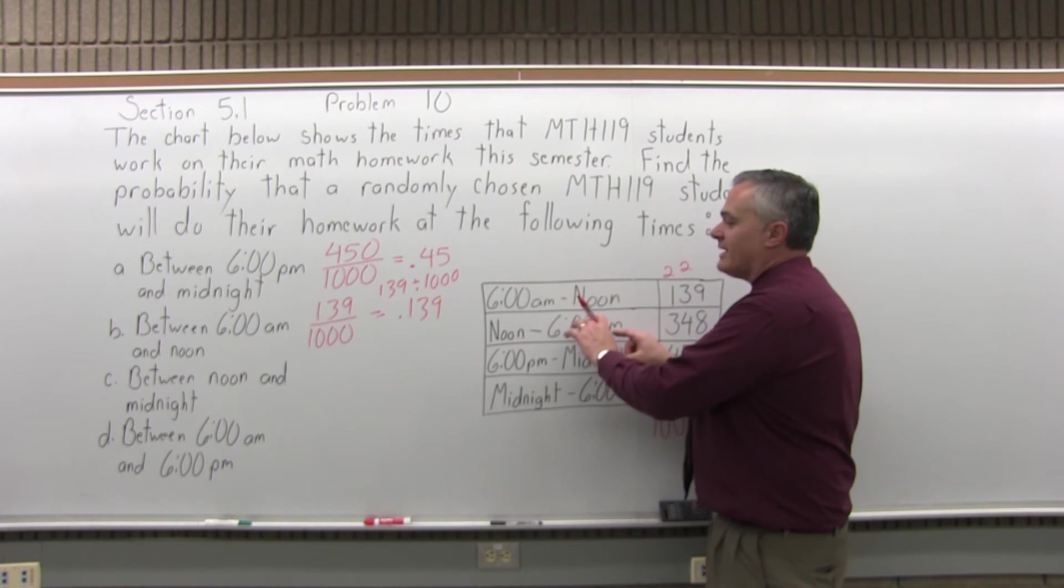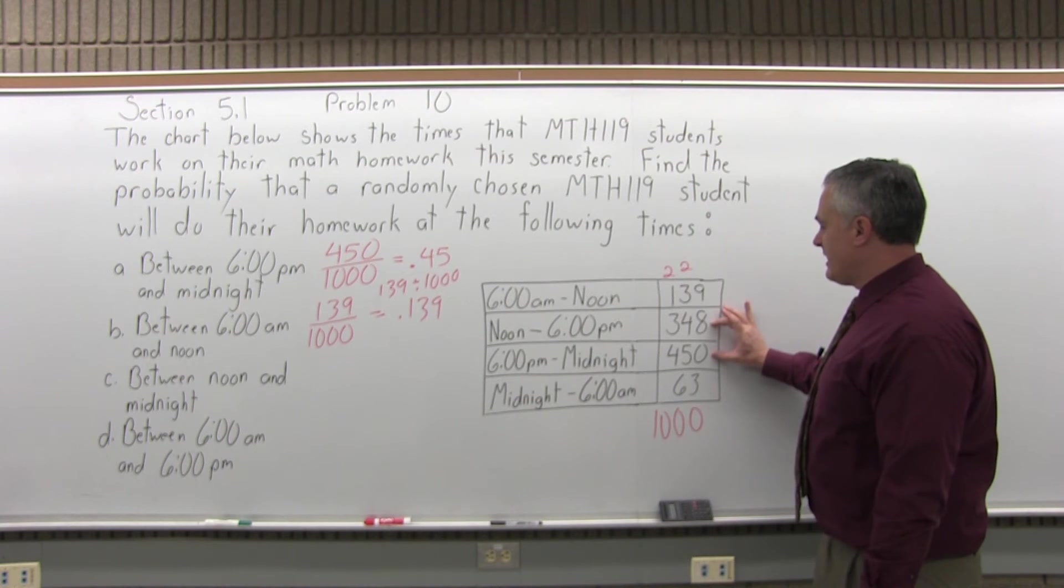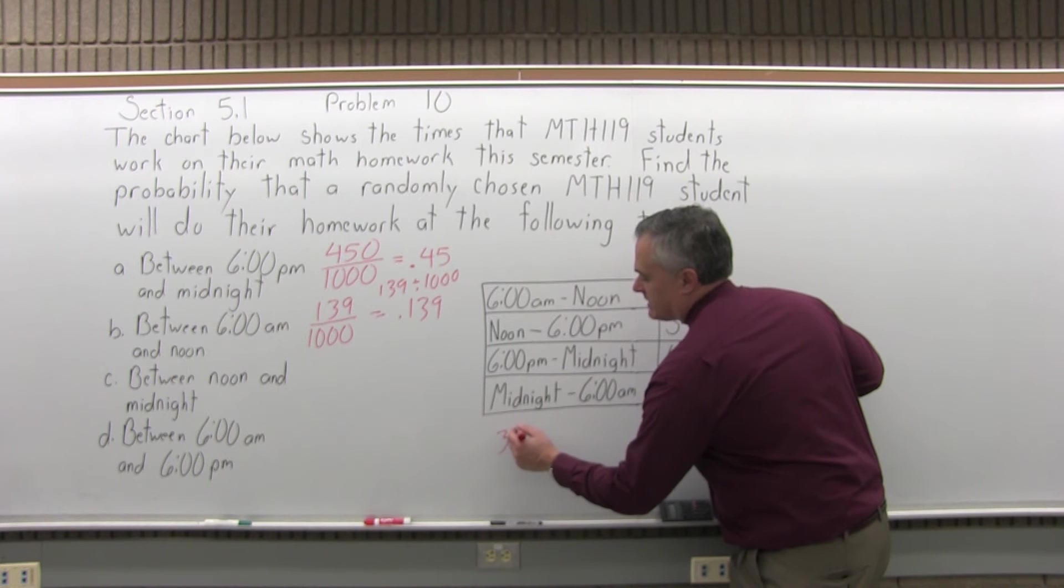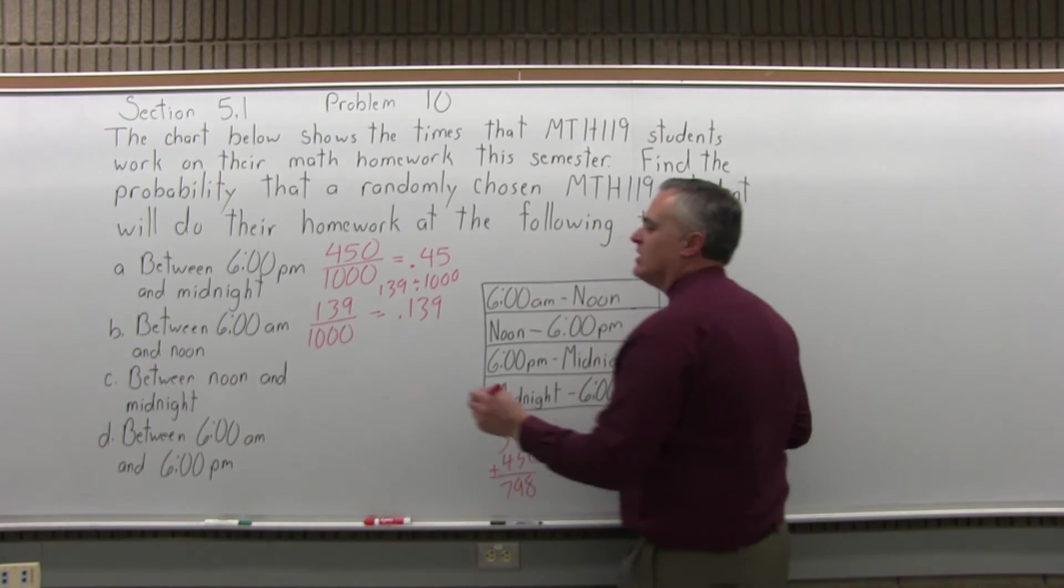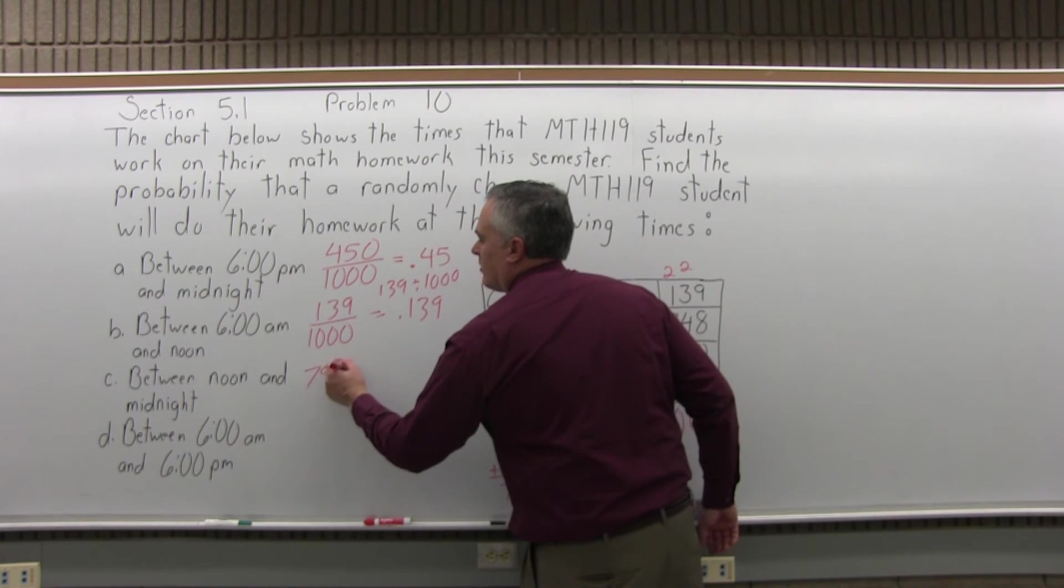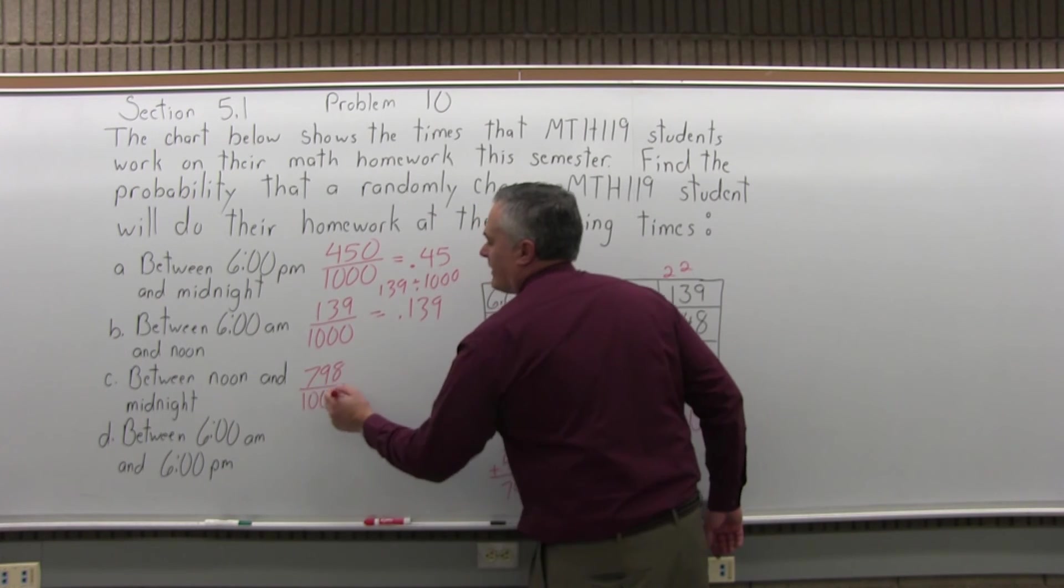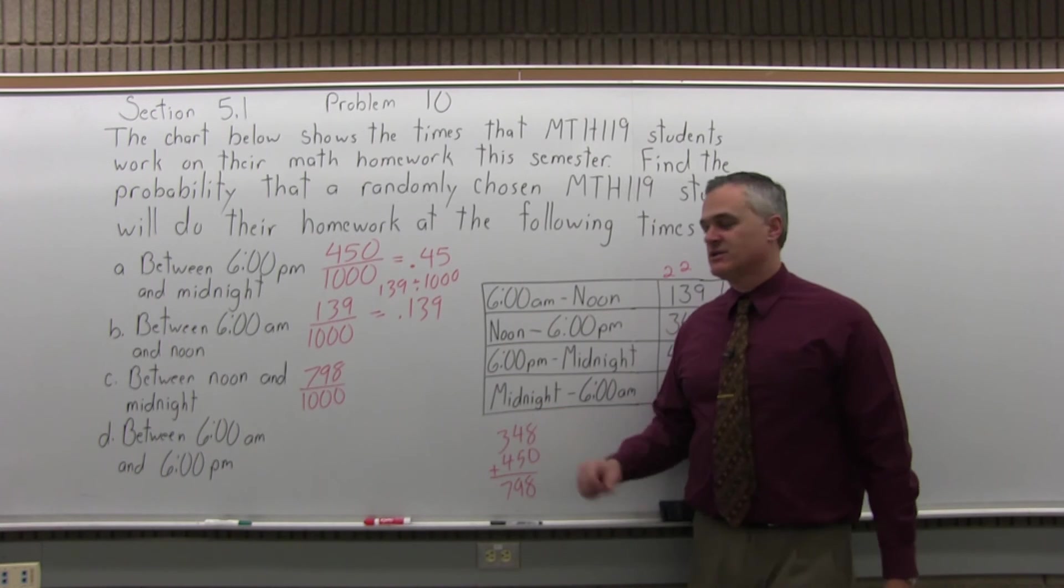These two combined give me between noon and midnight. So if I add 348 and 450, do that off to the side here, 348 plus 450 will be 798. So the probability that a student will do their homework between noon and midnight is 798 over 1,000, 798 that do their homework between noon and midnight out of 1,000 altogether.